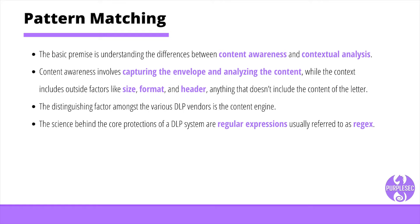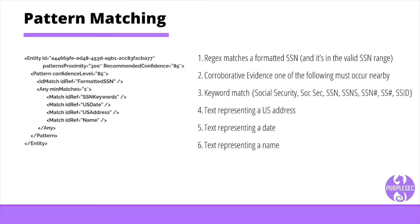For example, you can define patterns to detect personally identifiable information, driver's license numbers, credit card numbers, or social security numbers. One of the most common patterns detected by DLP is the social security number. As an example, note how Microsoft utilizes regex and keyword matching to detect social security number patterns. 1. Regex matches a formatted social security number, and it's in the valid social security number range. 2. Corroborative evidence — one of the following must occur nearby. 3. Keyword match: social security, SOC SEC, SSN, SSNS, SS#, SSID, and so on.